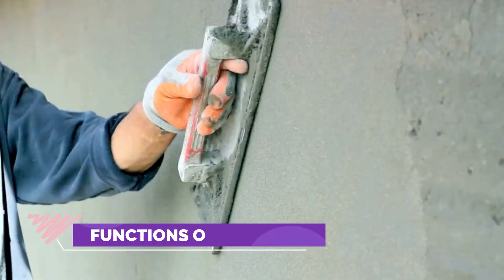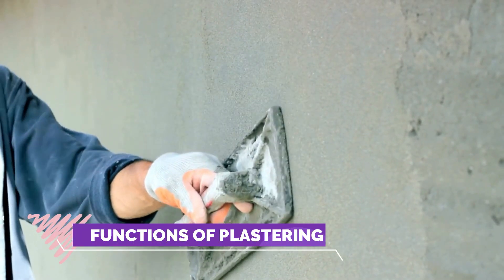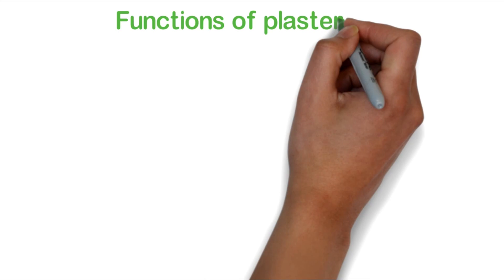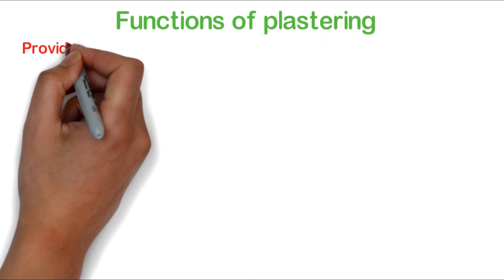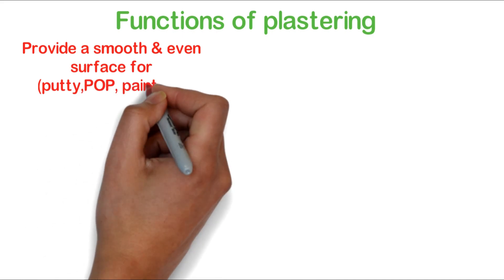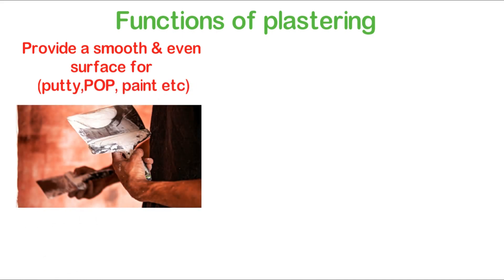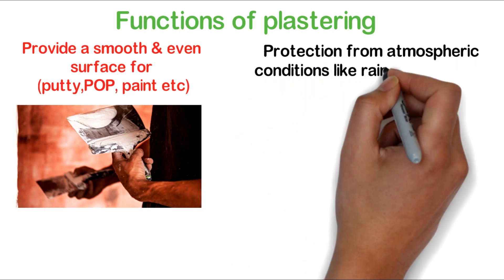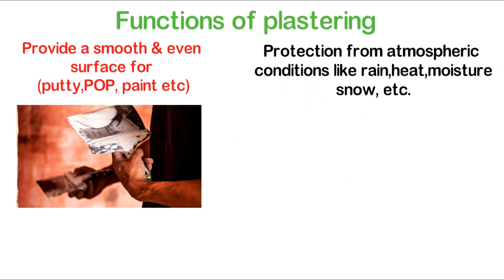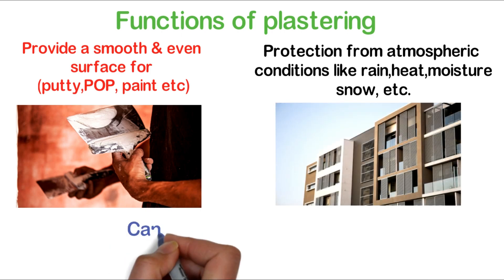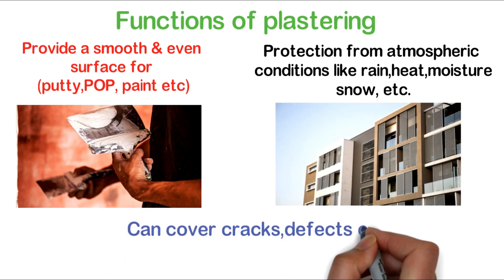What are the functions of plastering? First, plastering provides a smooth and even surface for putty, POP, paint, etc. They also give protection from atmospheric conditions like rain, heat, moisture, snow, etc. And plastering can cover cracks, defects, etc. caused during the construction stage.